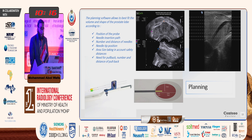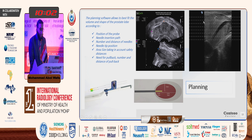We plan the technique using the transrectal approach in the axial and longitudinal planes using the interface. This is the urethra where the Foley catheter is seen, and the balloon is within the bladder, identifying the bladder neck. We should avoid the urethra and the bladder neck.